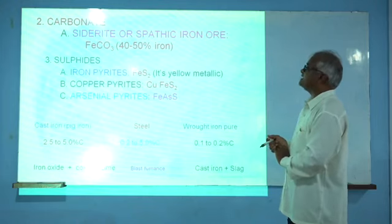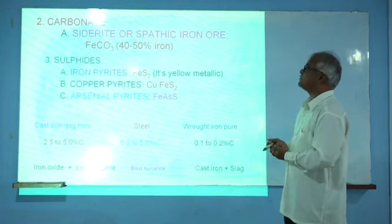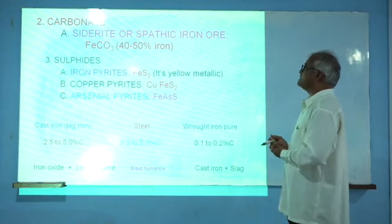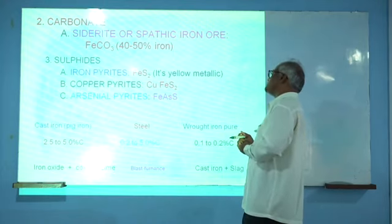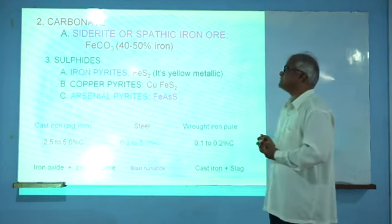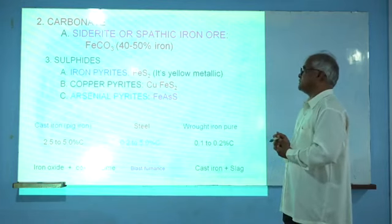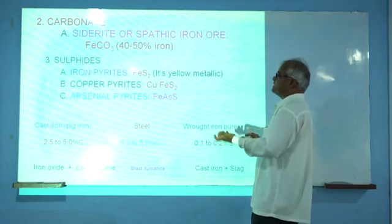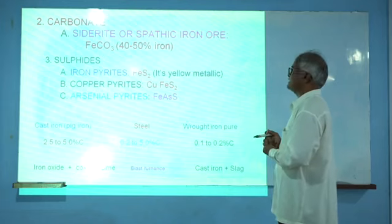In the second form, iron can occur as a carbonate. This carbonate in the form of siderite or spathic iron ore contains near about 40 to 50% iron in the form of iron carbonate. The maximum content can be manufactured by this occurrence in the form of carbonate mixture of iron carbonate.